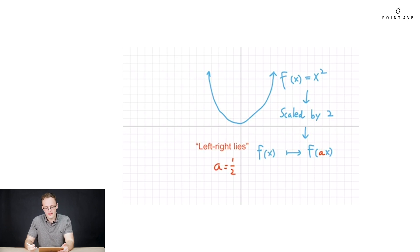But what is a? Well remember that in the x direction, left right lies. So instead of multiplying by 2 to scale by 2, we really need to divide by 2. So that's the same as multiplying by 1 half. Plugging that in, our function becomes 1 half x parentheses squared.